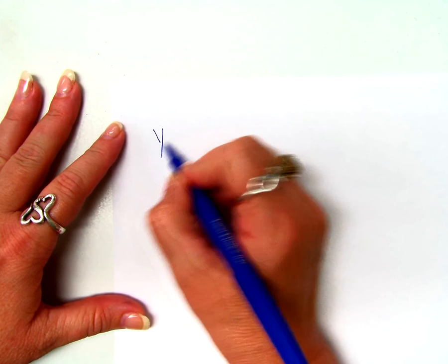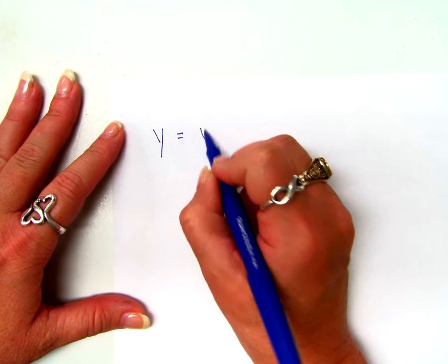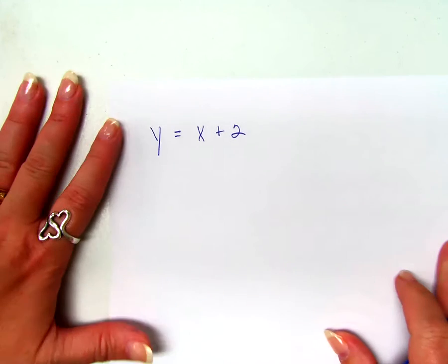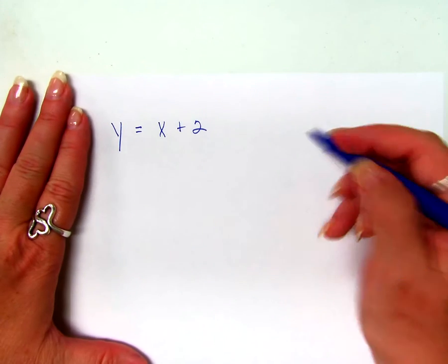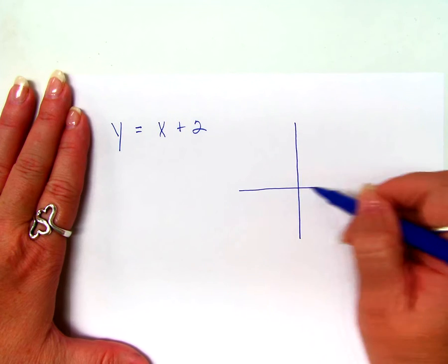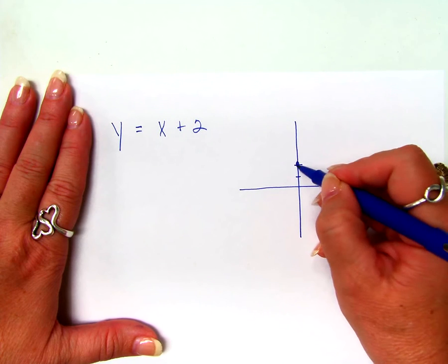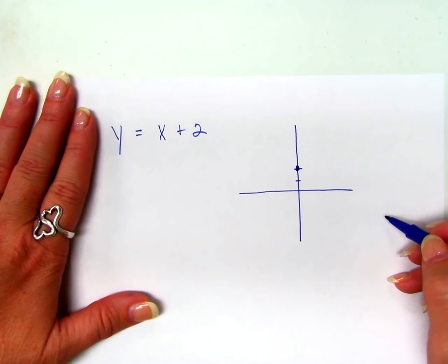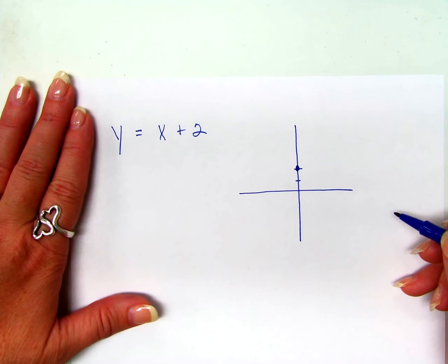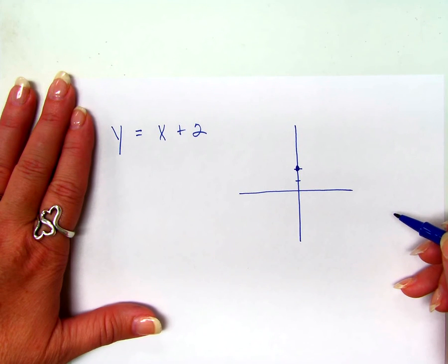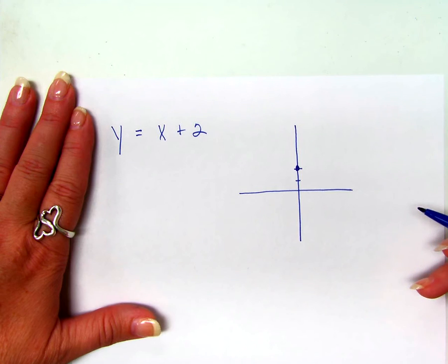All right, so here was the first thing that we've already done. You already know how to do this. Y equals X plus 2. How do I graph that? 2 is the Y intercept, so I go up 2 on the Y axis and put a dot, and then I use my slope. What's my slope?